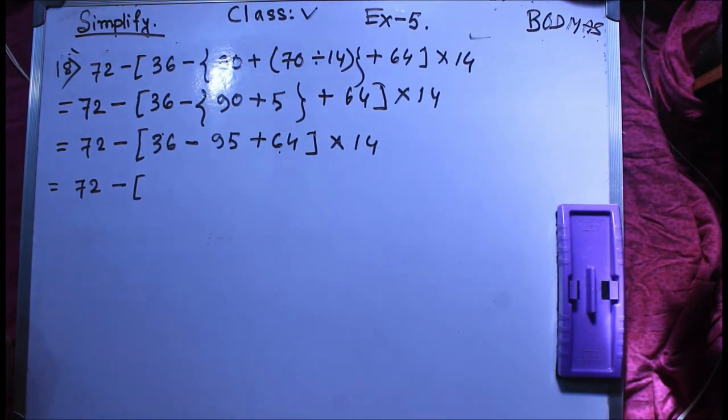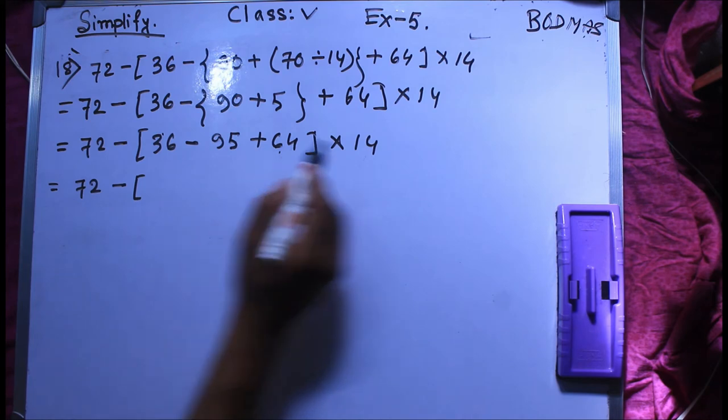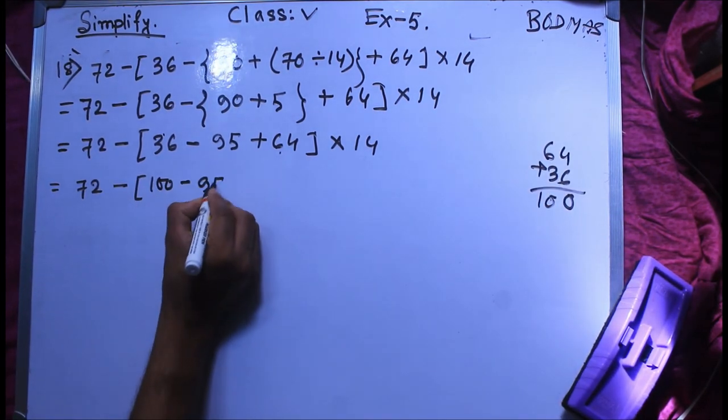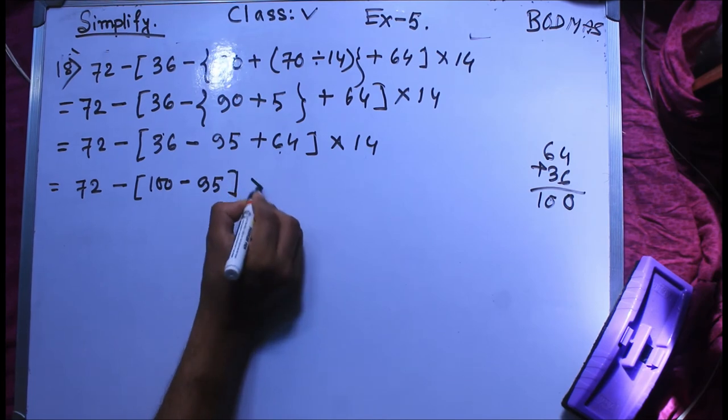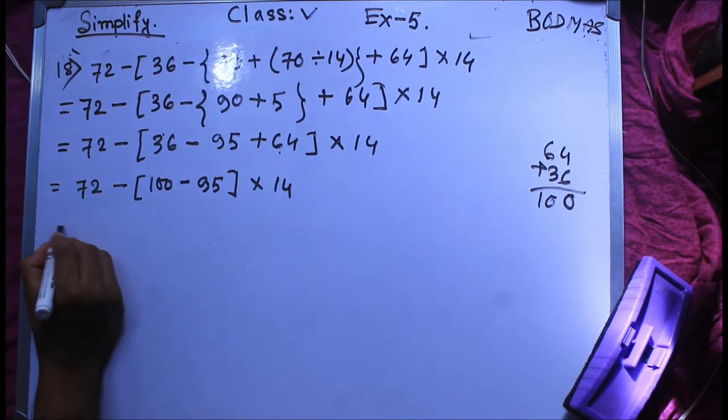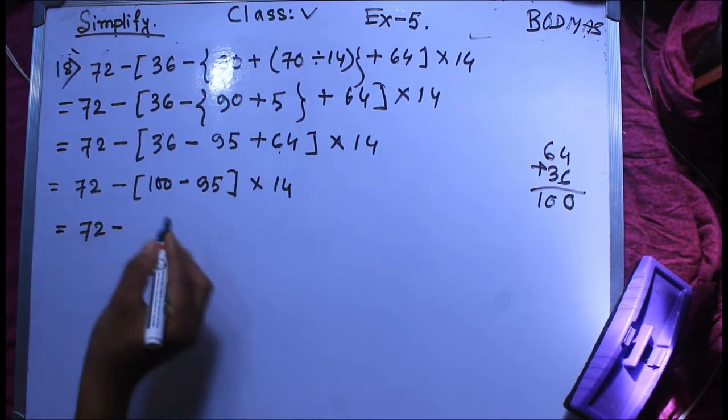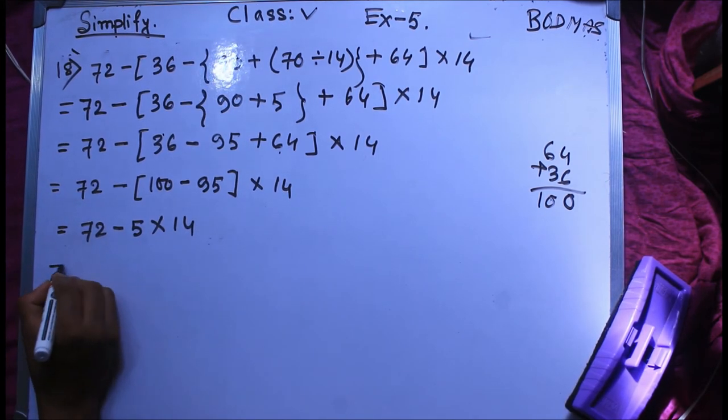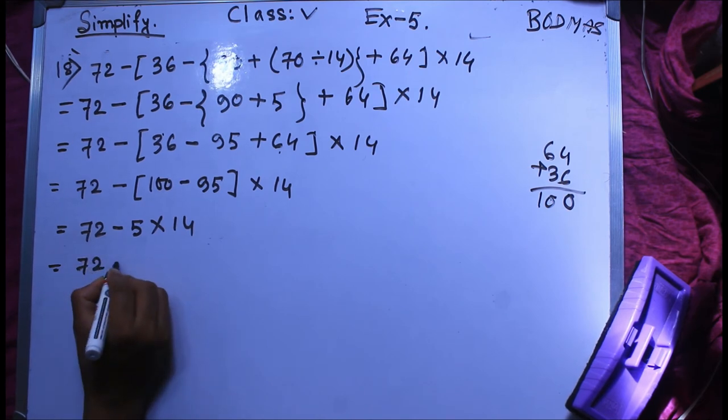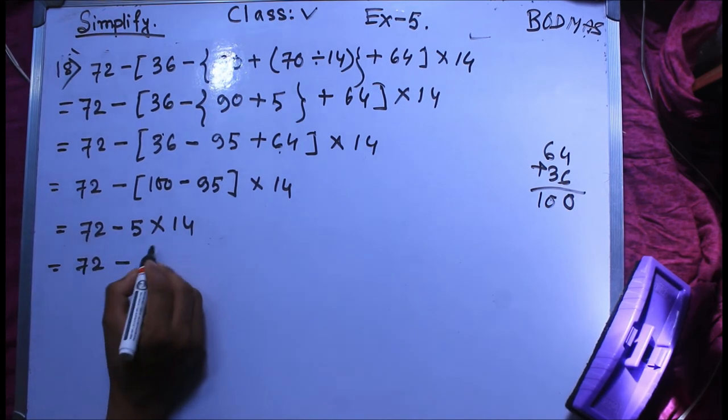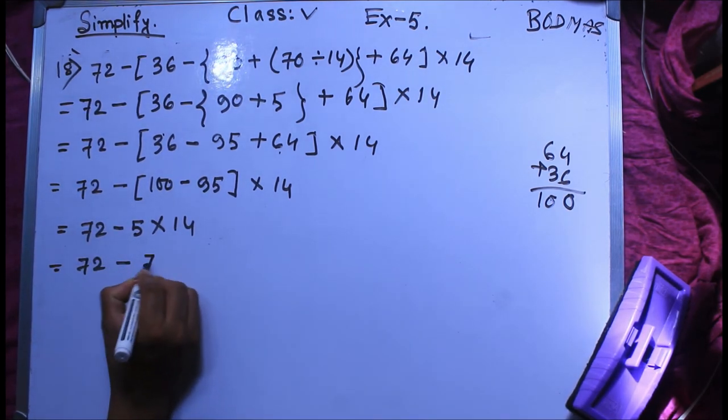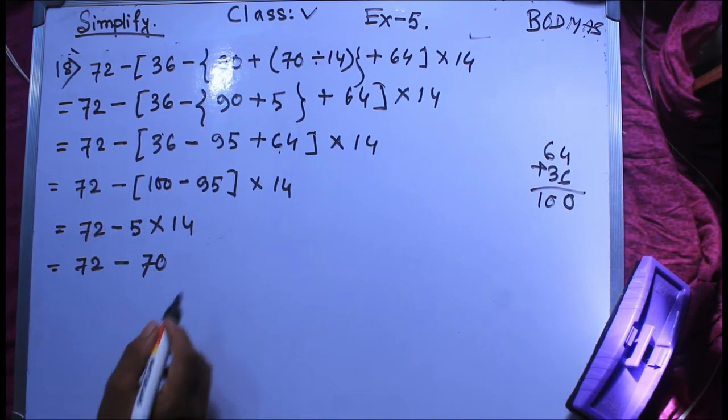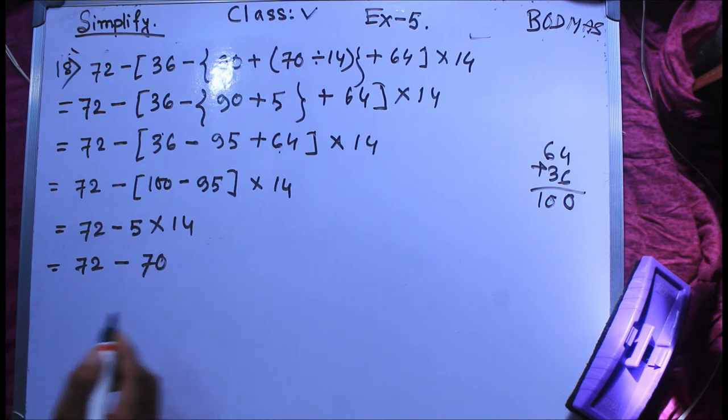So we have third bracket. I am going to add 100 minus 95, third bracket into 14. So I will add 72 minus 5 into 14. So I am going to multiply 72 minus 17. So 14 into 5 is 70.